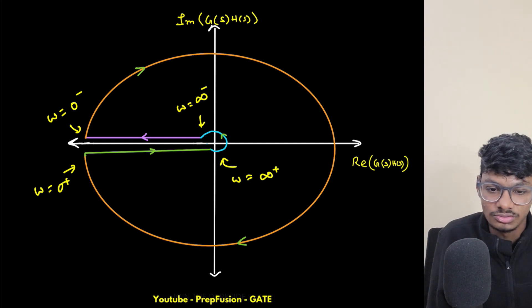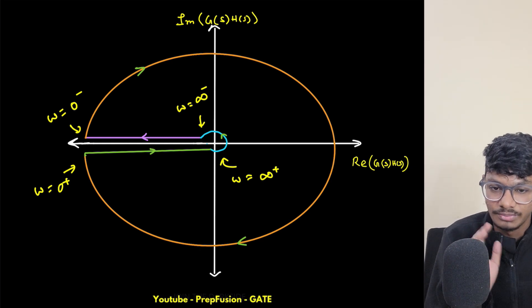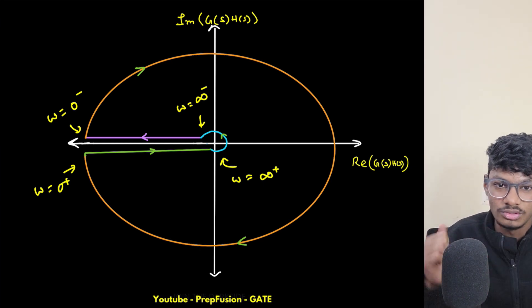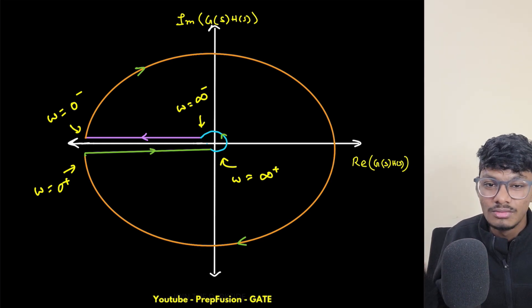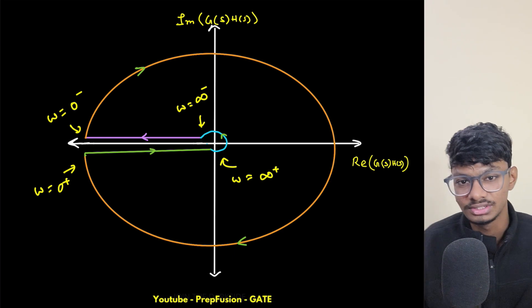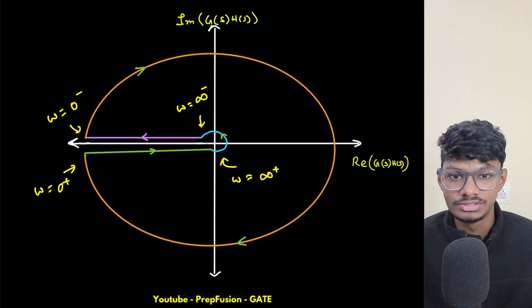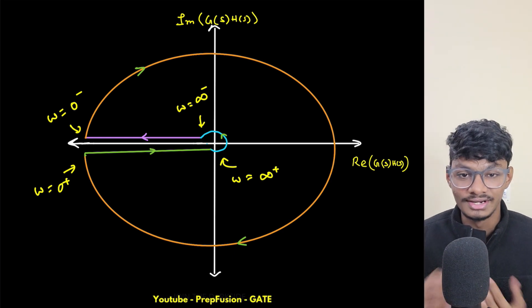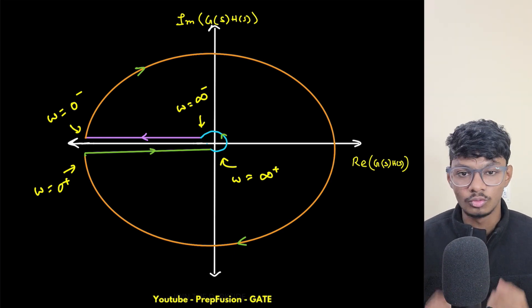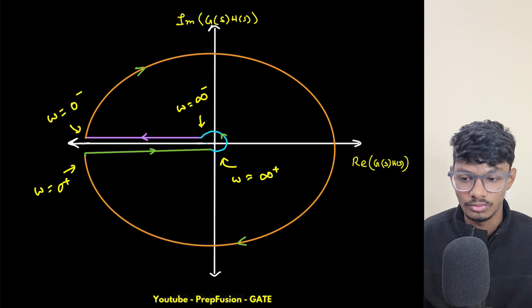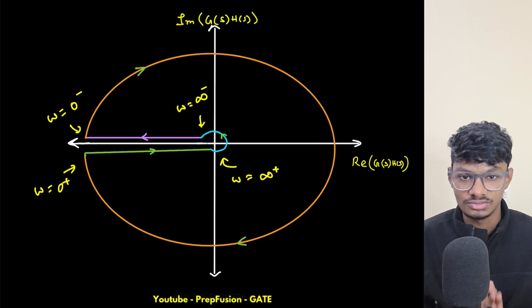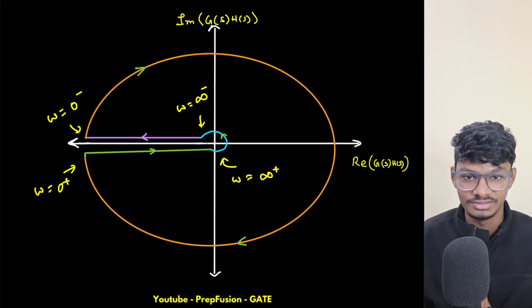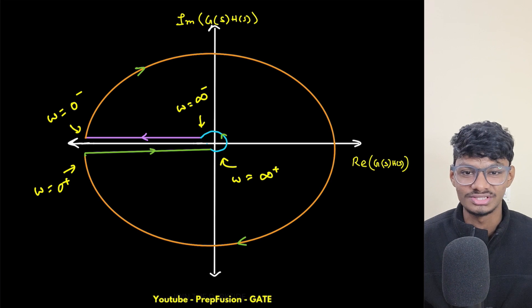The last question is left as homework — it uses a simple Nyquist contour since there are no poles at the origin. We're almost finished with the Nyquist chapter, and next we'll start with the Bode plot chapter. Thank you for watching and I'll see you in the next video.